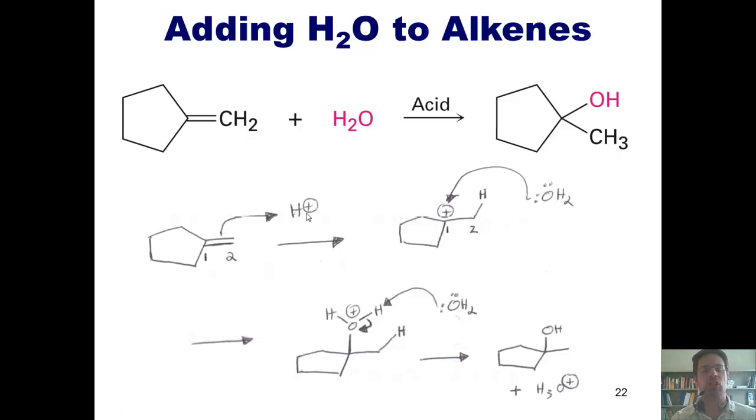Thus, we see that the OH always ends up going into the more substituted carbon, that is the carbon that would give the more stable carbocation intermediate, which, in examples like this, is the internal carbon, while the hydrogen from the acid ends up going on the external carbon in the carbon-carbon double bond.